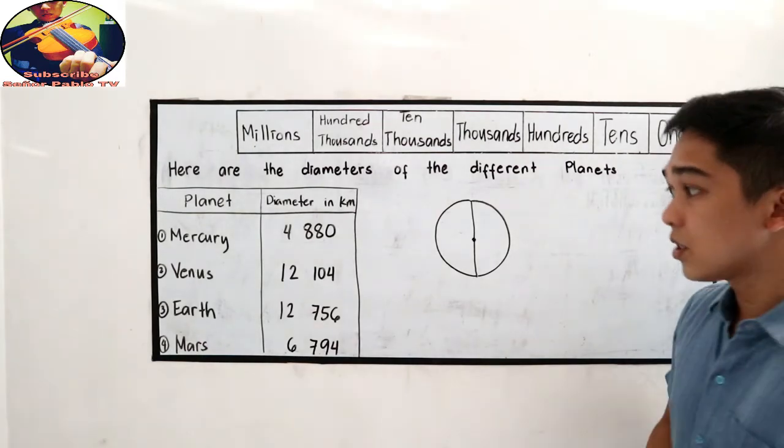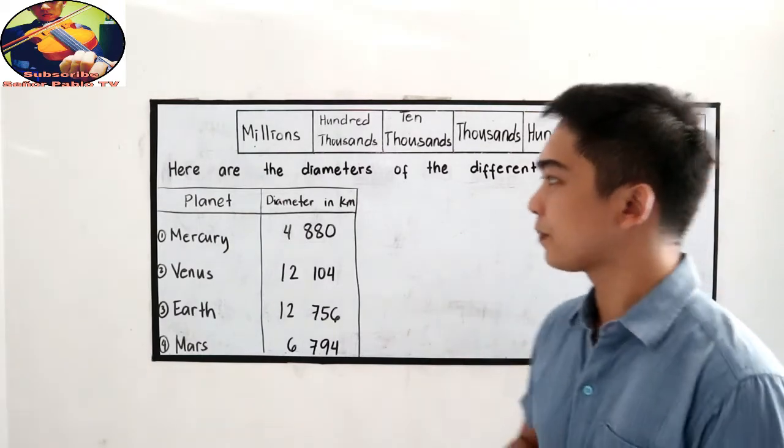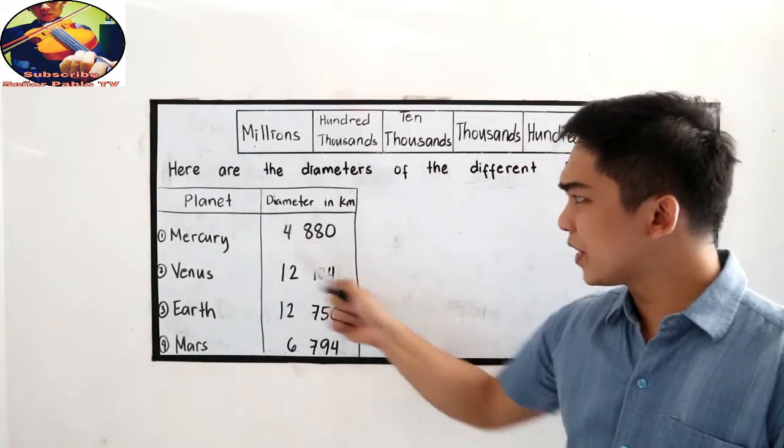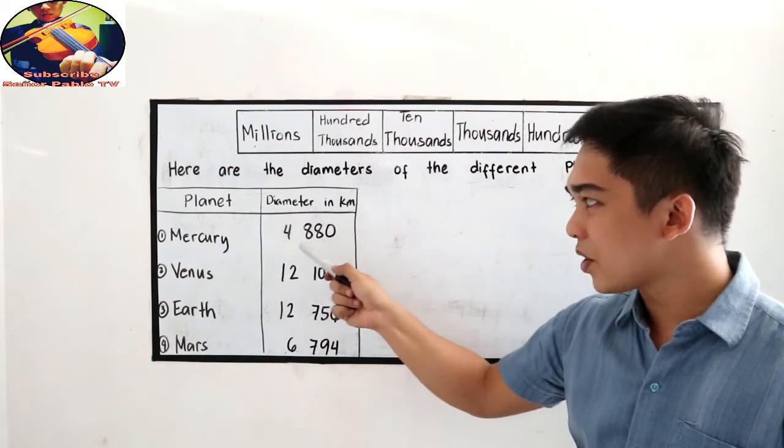So we have Mercury, Venus, Earth, and Mars, the first four planets. So Mercury, the diameter is 4,880.